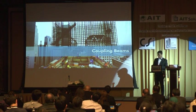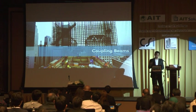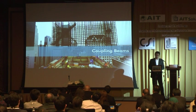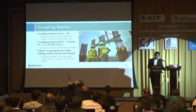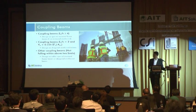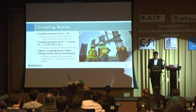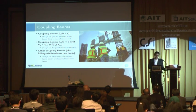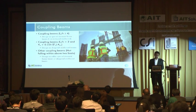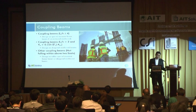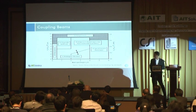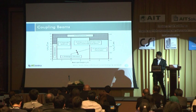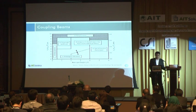Coupling beams. Shear walls with coupling beams have openings. There are two types of coupling beams: one is the diagonal coupling beam and another is the conventional reinforced coupling beam like moment frame beams. If the L/H ratio is more than 4, we use the conventional reinforced beam. If L/H is less than 2 and shear demand is large, we use diagonal reinforced coupling beams. This diagram helps decide which type of coupling beam to use.